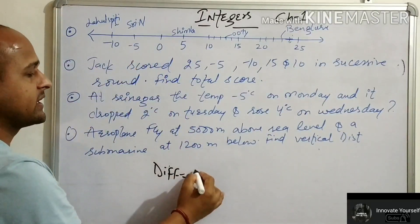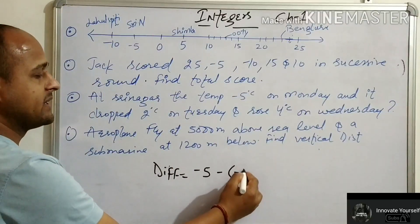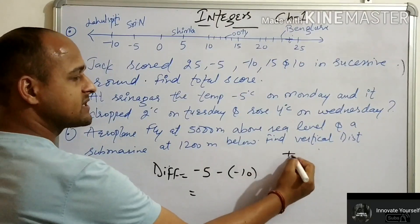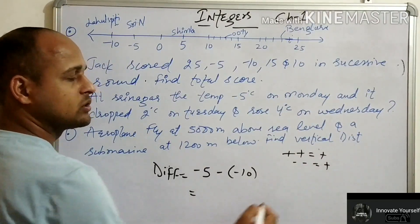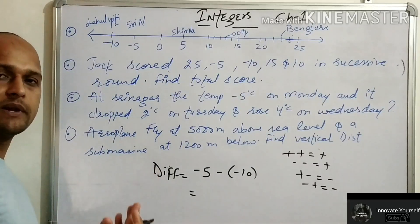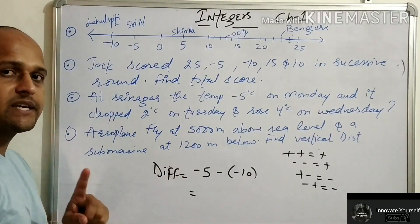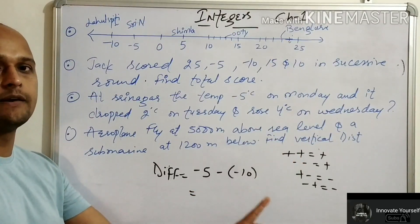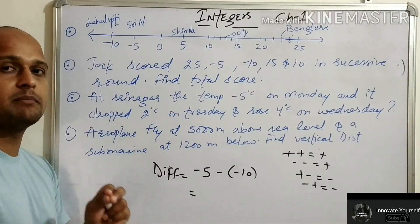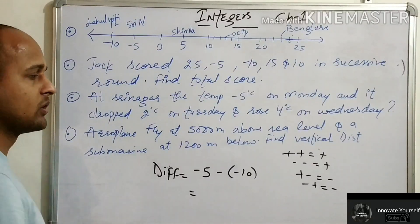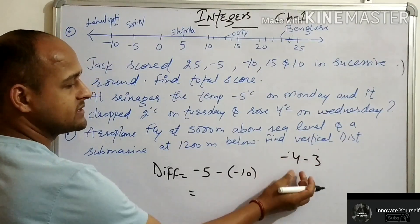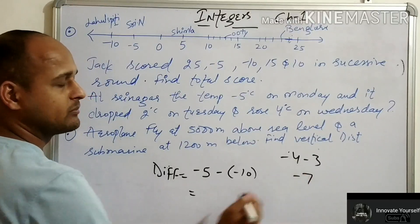Difference means subtraction: minus 5 minus (minus 10). For same sign, we do subtraction and the greater number's sign is used. For opposite signs in addition or subtraction, the greater number's sign applies. For multiplication, we only look at the sign — not who is greater or smaller. For example: minus 4 and minus 3 are same sign, so add 4 and 3 to get 7, and since both are negative, the answer is minus 7.